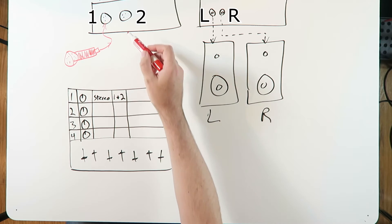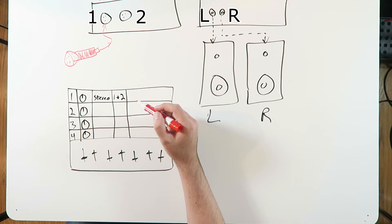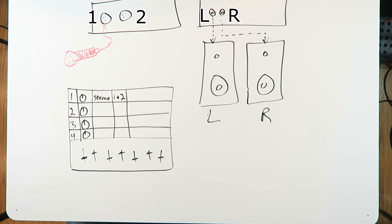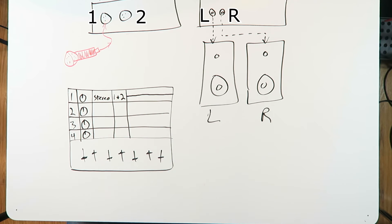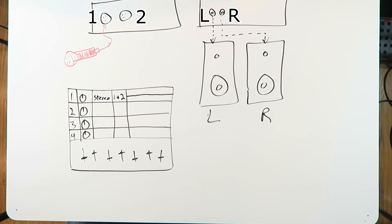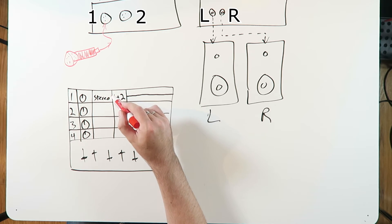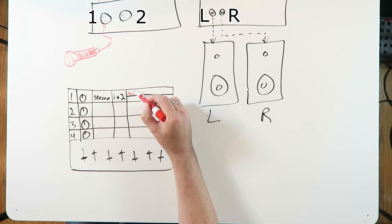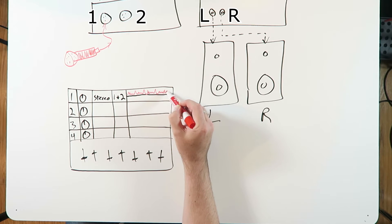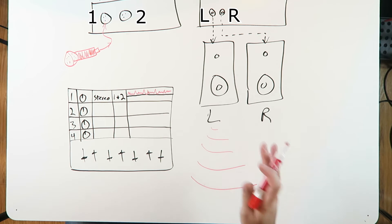Let's say we don't plug anything into input number two. We hit record in our DAW. What this one stereo track is going to want is two separate inputs — a left and a right. We've only got something plugged into input number one. So when we hit record, only on the left-hand side are we going to get any information on our recorded track. When we play that back, we're only going to hear it out of the left-hand side of our speaker system or headphones.